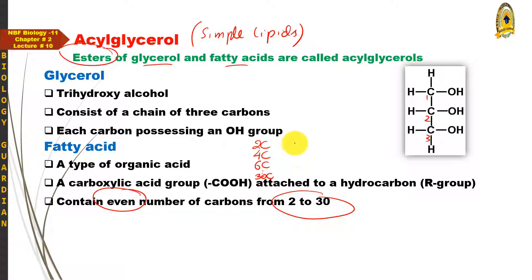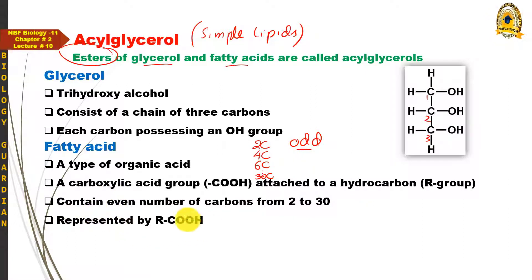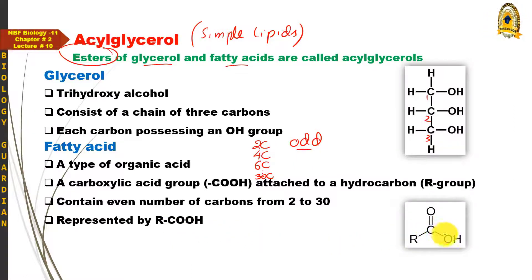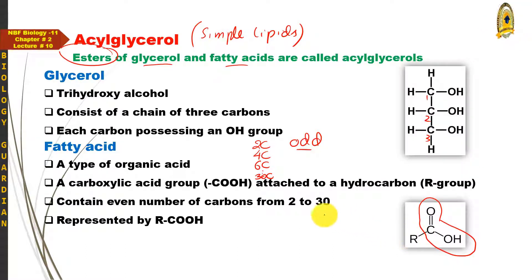Odd numbers پر مشتمل organic acids کو fatty acids نہیں کہا جا سکتا — وہ organic acids ہوں گے لیکن fatty acids نہیں۔ Fatty acids کو represent کرنے کے لیے وہی general formula use ہوتا ہے جو organic acids کے لیے use ہوتا ہے، جس میں carboxylic acid group (C=O اور OH) ہوتا ہے۔ اس carboxylic acid group کے ساتھ اگر R group attach ہو اور even number of carbons between 2 to 30 ہوں تو یہ fatty acid ہوگا۔